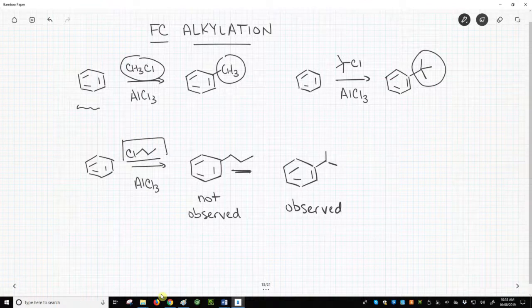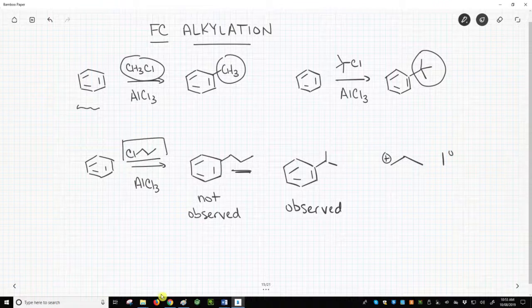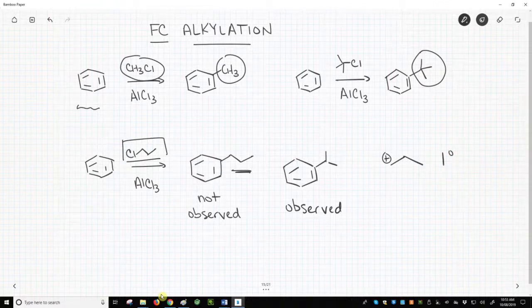This result gets back to our carbocation intermediate. If we form a propyl cation as our electrophile, then the primary propyl cation will very quickly